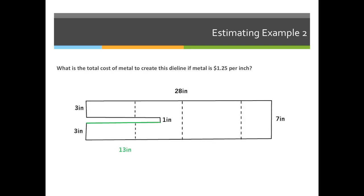I'd like you to try the next example on your own. Try to figure out the total amount of metal required to create this die, and then figure out how much it costs if the metal is priced at $1.25 per inch.